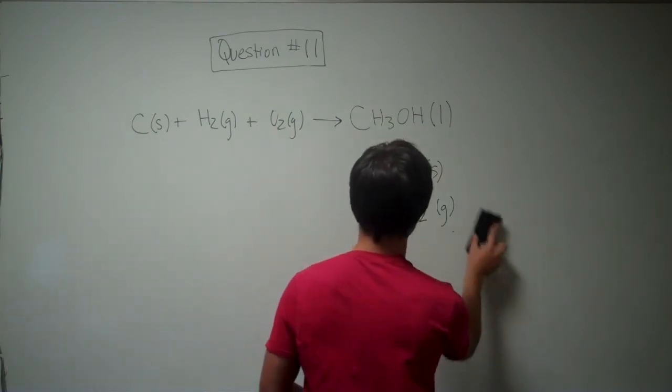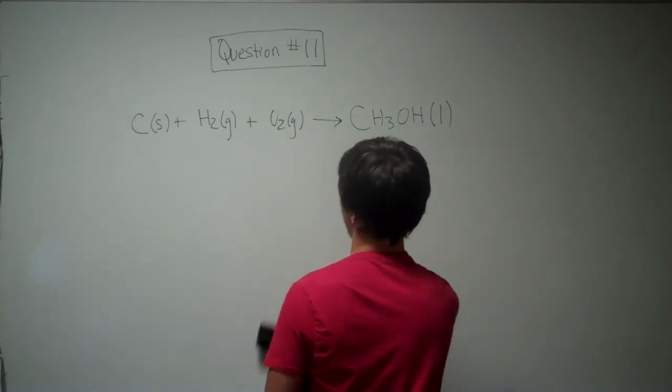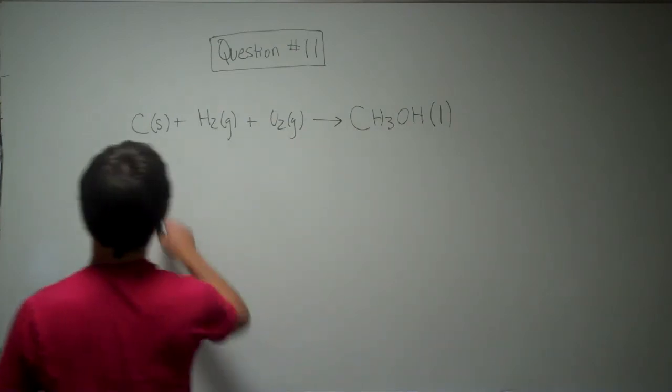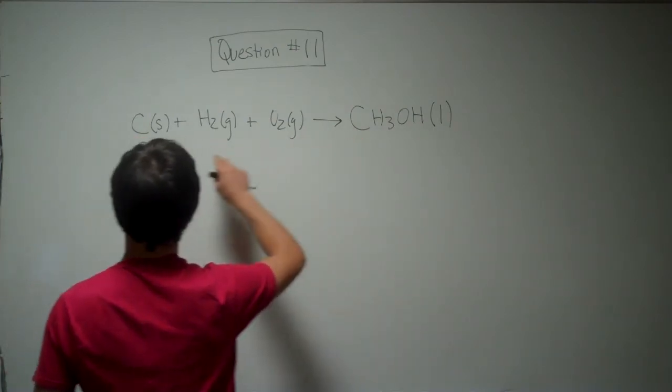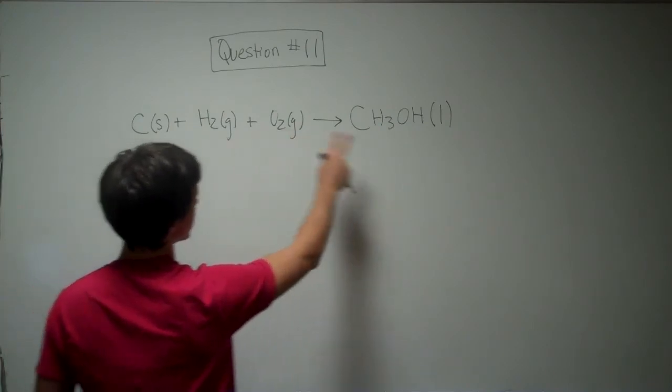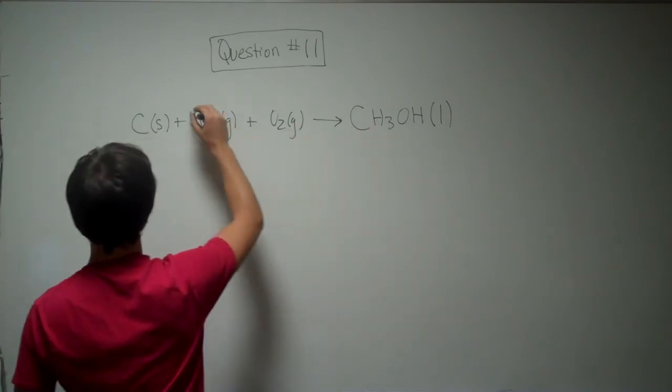So this will be your right answer, unless it's not balanced. We have one carbon, we have two hydrogens over here, but four over here, so we need double this.